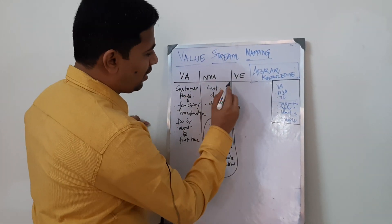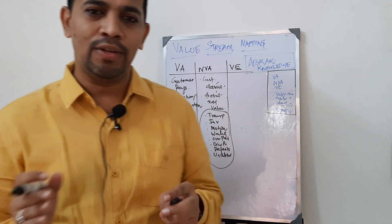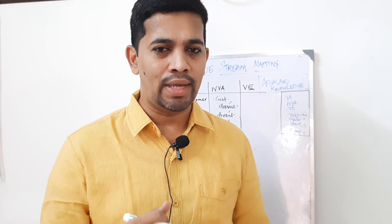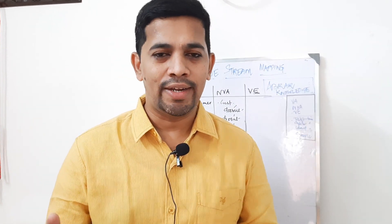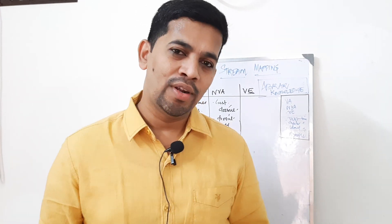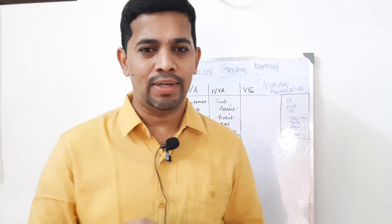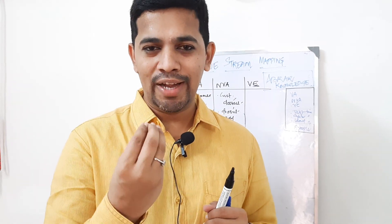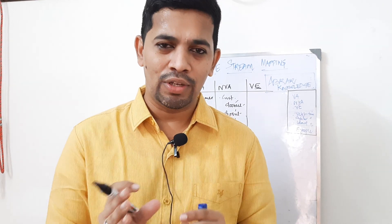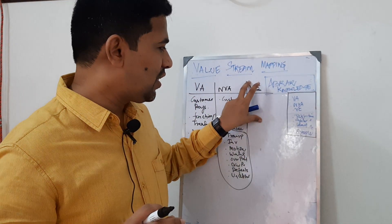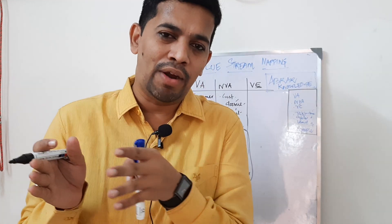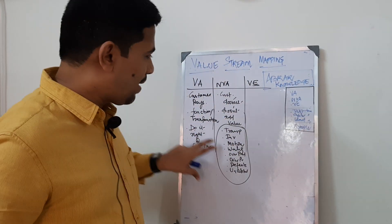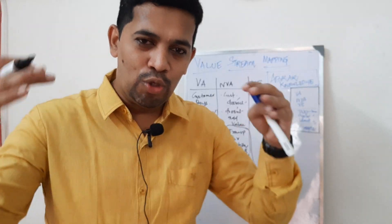The last one we have in between is value enabled. Value enabled is something which is part of a regulatory requirement or a statutory requirement. Regulatory requirement means it is coming from a standard — meaning like ISO, IATF, and so on. Statutory means legal law. For example, take the example of tea — when you say tea, it has to be hot. That is an implied requirement. So anything which is there as an implied, statutory, or regulatory requirement is called value enabled.